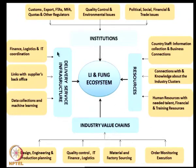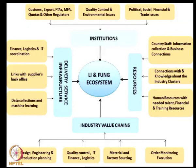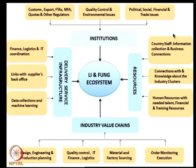If you look at the supply chain and draw this ecosystem map, any orchestrator like Li and Fung can identify what competencies they should have. In this case the mapping is done after the fact so you can learn what Li and Fung does. But for a hypothetical orchestrated system, you can also use this framework to generate required competencies and core capabilities — working in the reverse direction as well.